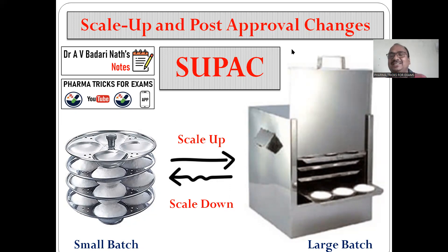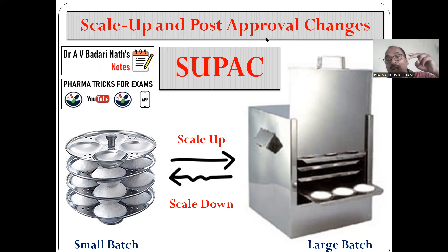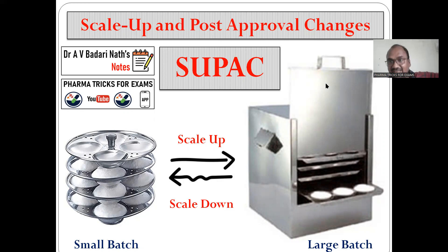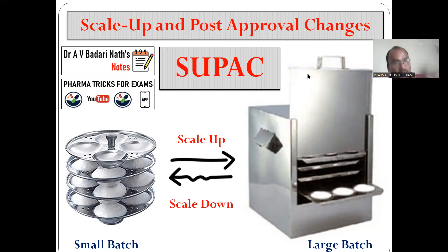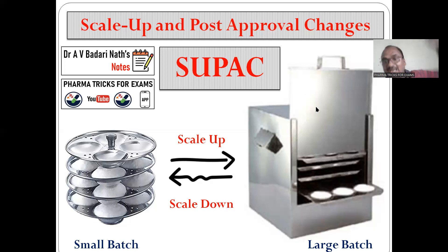Post approval changes — just like prepaid and postpaid phones we are using now. Post approval means after getting the approval, you want to make a modification. You may want to change the formulation, change the site of manufacturing, change the manufacturing vessel, or change the process parameters. But you already have approval and now you want to change. So again we have to go for documentation — what documentation to submit, whether we have to start from the beginning. All these things are discussed in post approval changes.